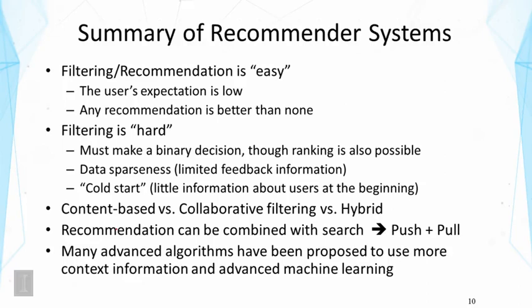This is an active research area where new algorithms are being proposed all the time. In particular, new algorithms tend to use a lot of context information — context of the user as well as context of documents or items. Items are not isolated and they are connected in many ways, and users might form social networks as well. There is rich context that we can leverage to solve the problem well, and machine learning algorithms have been applied in this area.